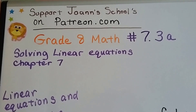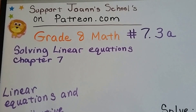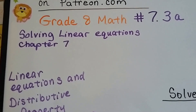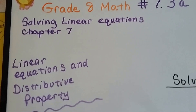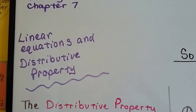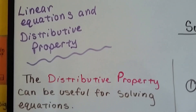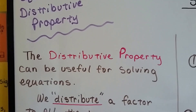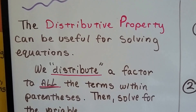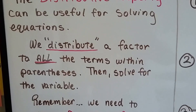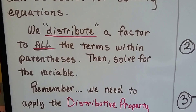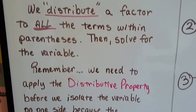Grade 8 math, number 7.3a. This entire chapter 7 is about solving linear equations. Now we're going to do linear equations with the distributive property. The distributive property can be useful for solving equations. We distribute a factor to all the terms within the parentheses, then solve for the variable.